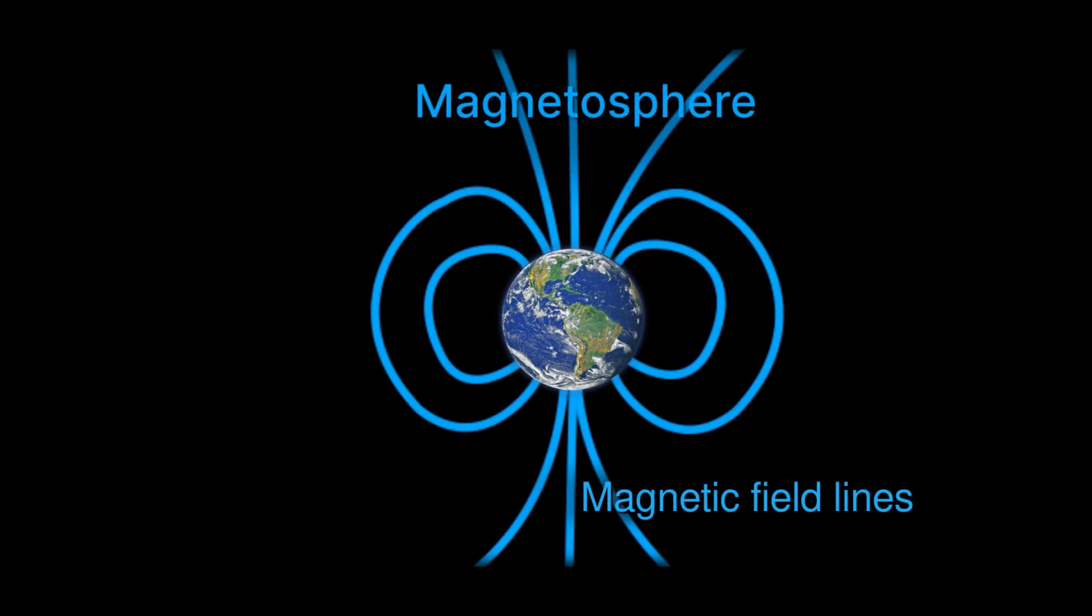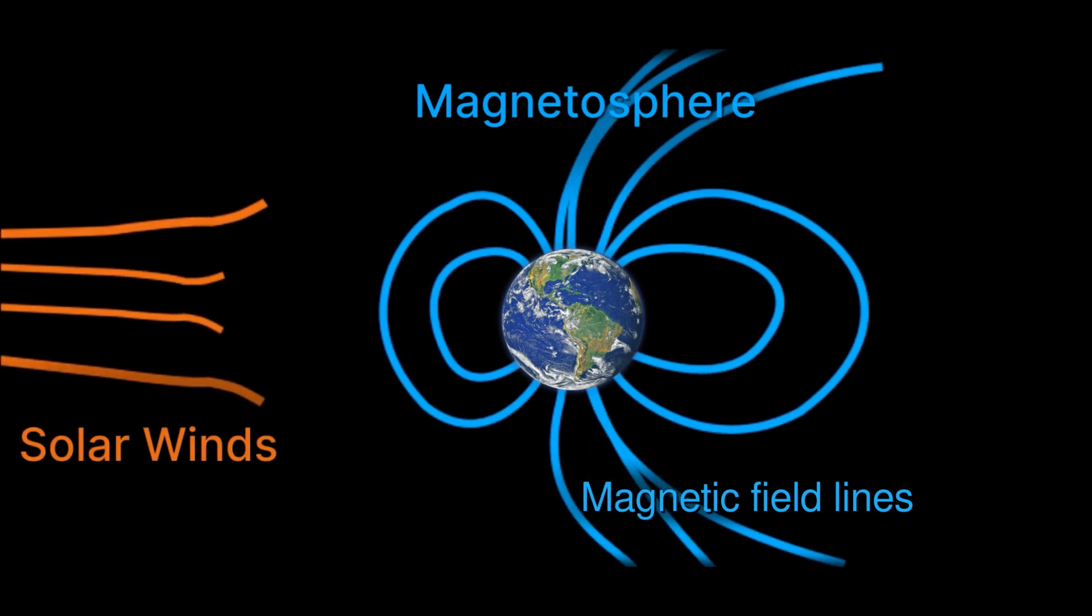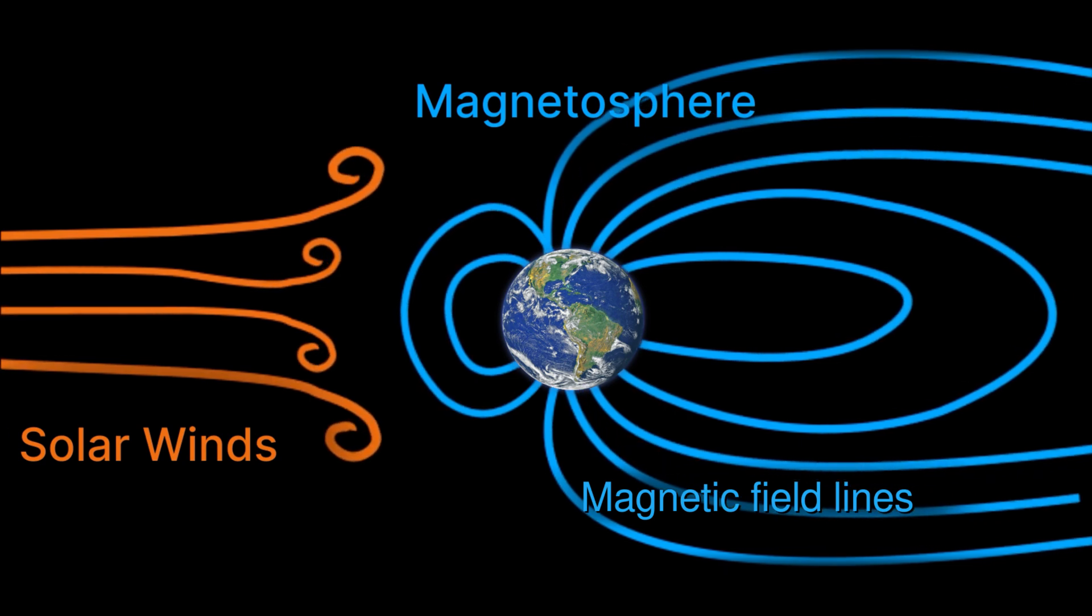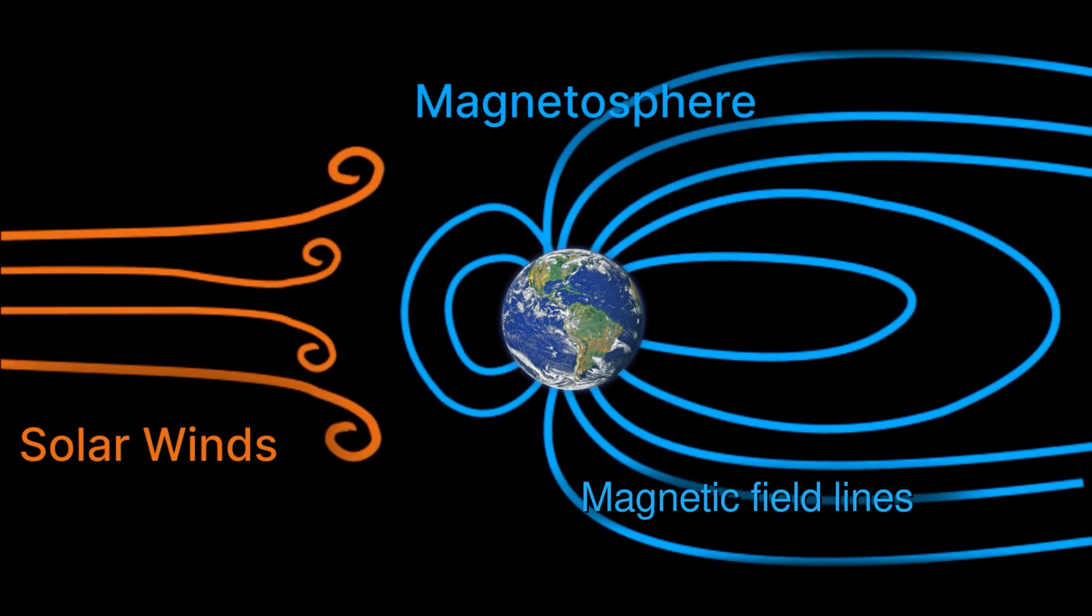The story starts with Earth's dipole field that forms the magnetosphere, a giant magnetic bubble that shields Earth against harmful supersonic solar winds. Under this constant confrontation, the magnetosphere is deformed by the solar wind pressure into a comet shape.